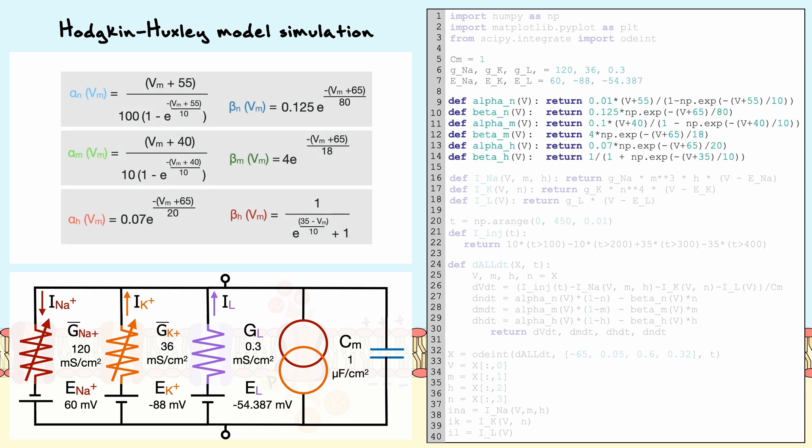Then, we can establish the equations for the transition rates of each gating variable. In this code, they have decided to use different settings in each equation in comparison to the ones I've presented to you, but it doesn't matter too much because the results are still faithful to the ones of Hodgkin and Huxley.